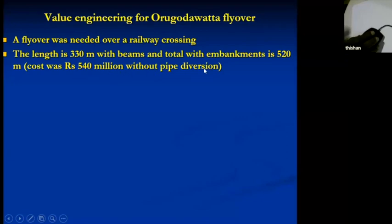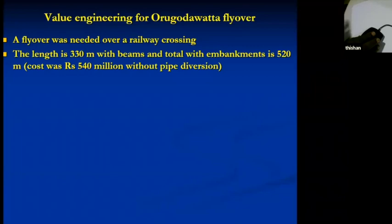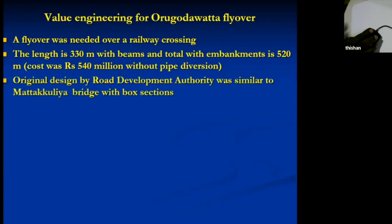The cost of pipe diversion was 260 million. The contractor proposed using 4 piles of 1.2 meter diameter instead of 10 piles of 1 meter diameter. So the number of piles was reduced from 10 to 4, but when you do that, there are many other problems to solve. I'll briefly explain the various problems we encountered and how those were solved.